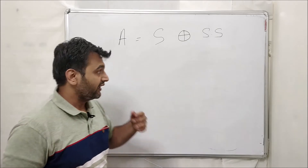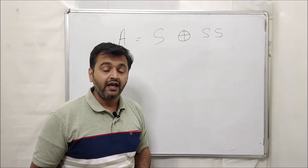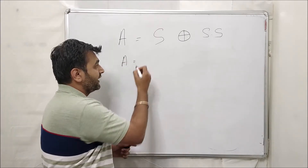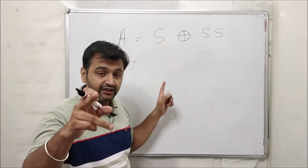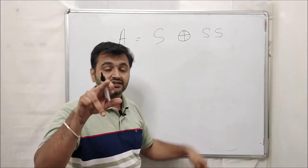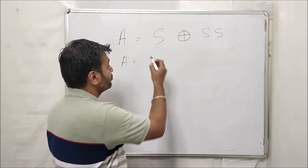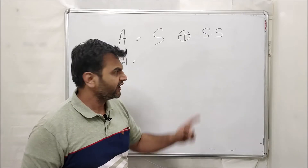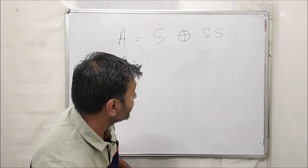What uniqueness means is: if I am writing a matrix as a sum of a symmetric and skew-symmetric matrix, and you are also writing the same matrix as such a sum, then my symmetric matrix and your symmetric matrix must be the same, and my skew-symmetric matrix and your skew-symmetric matrix must also be the same. You cannot have two different decompositions for the same matrix in terms of symmetric and skew-symmetric.